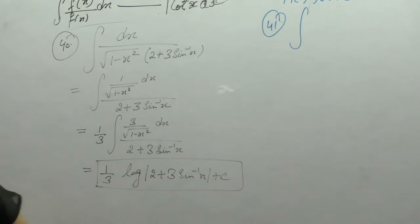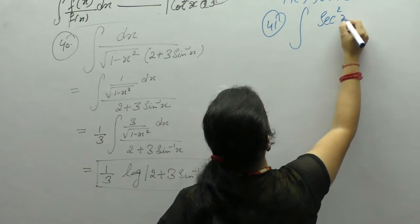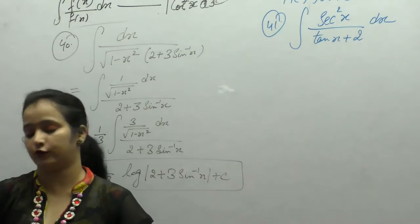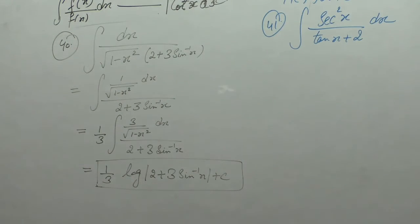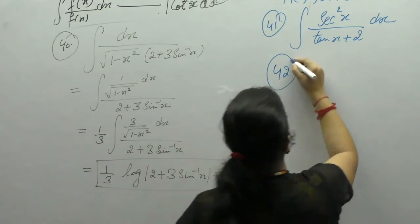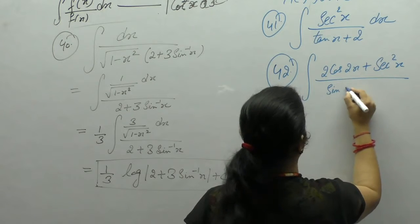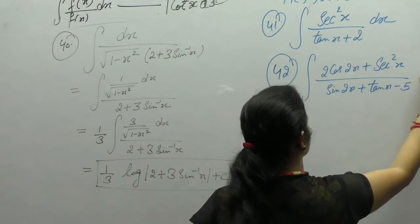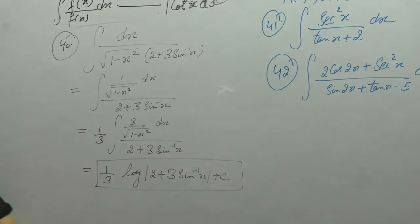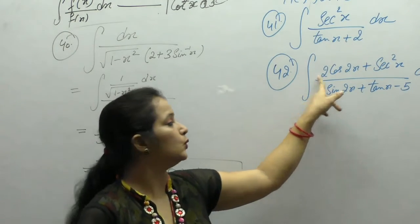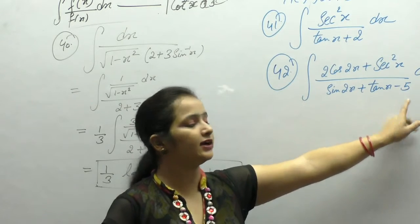Integration of sec²x upon (tan x + 2): derivative of tan x is sec²x and derivative of 2 is constant, so we directly apply the formula integral of f'(x)/f(x). Next is integration of (2cos 2x + sec²x) upon (sin 2x + tan x - 5). In this question also, derivative of sin 2x is cos 2x times 2, derivative of tan x is sec²x, and derivative of the constant term is 0 — so the numerator is the derivative of the denominator.